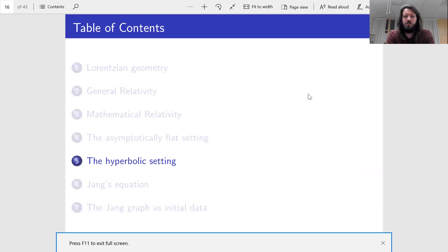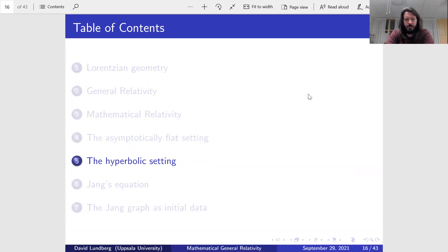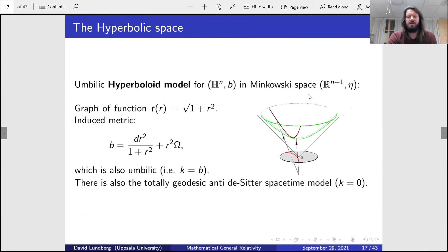Okay, so we now move on to the hyperbolic setting. We just talked about asymptotically flat initial data where the metric approaches the Euclidean metric. Now we're talking about the hyperbolic setting instead, where the metric approaches the hyperbolic metric.